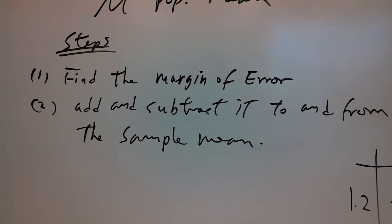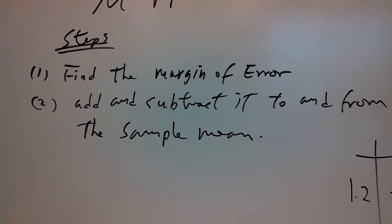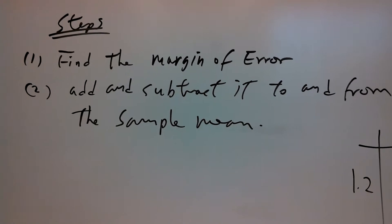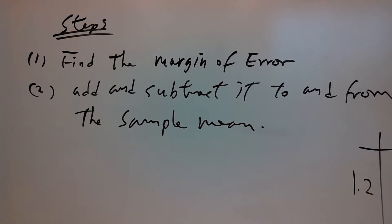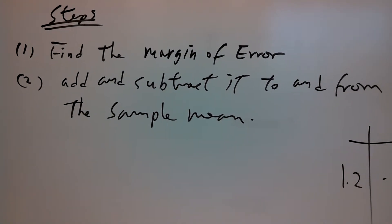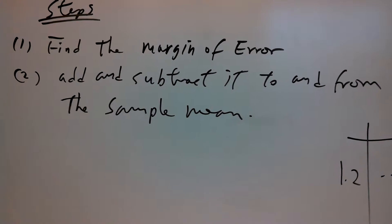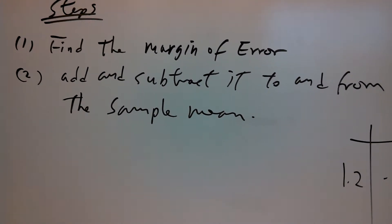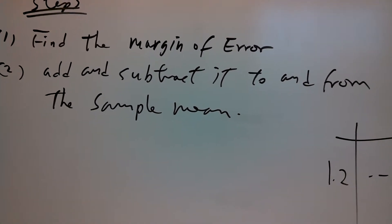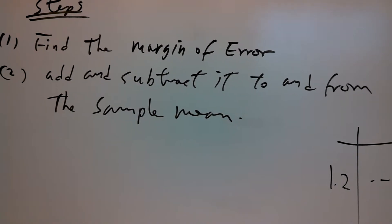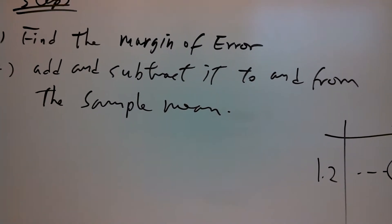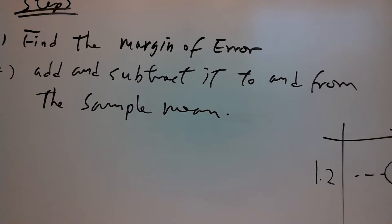Once we get the margin of error, we subtract it from the sample mean and we add it to the sample mean. That gives us our confidence interval — the two numbers between which the population mean is located.